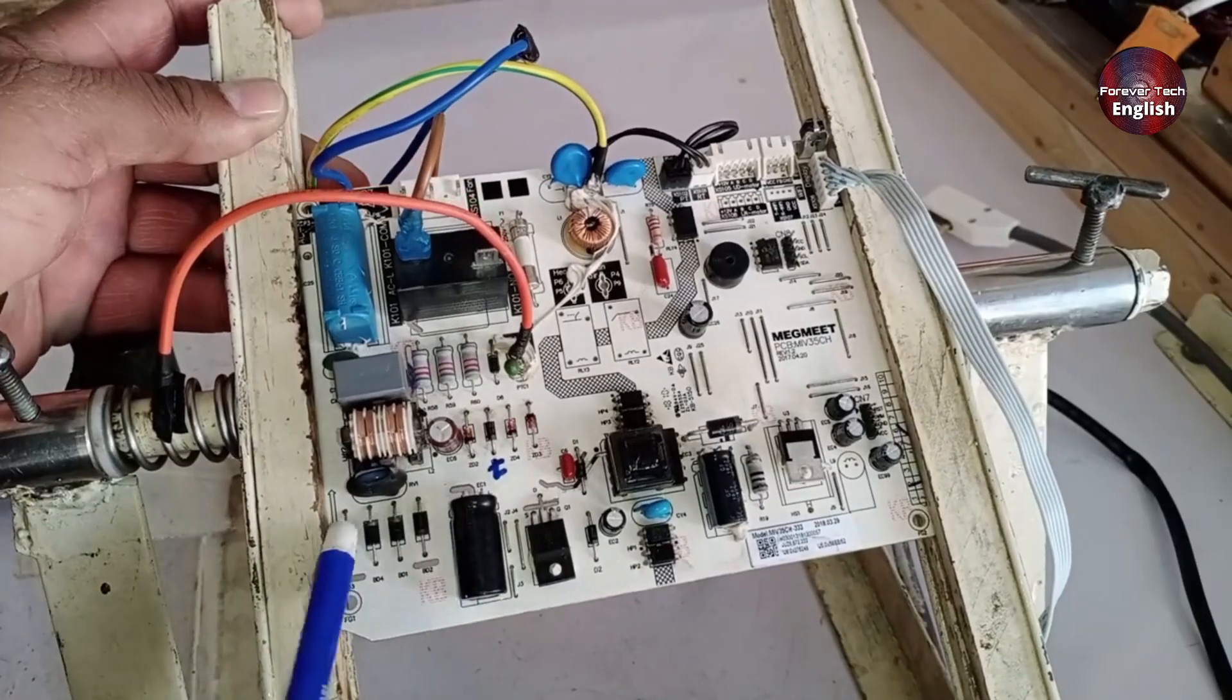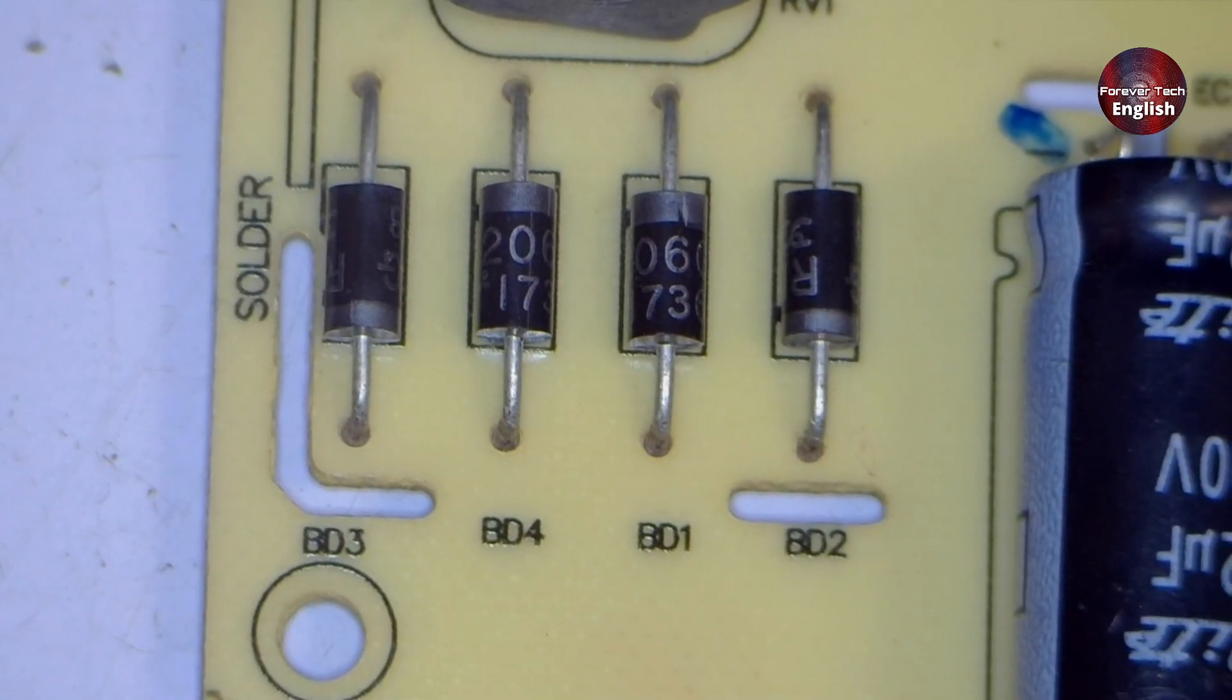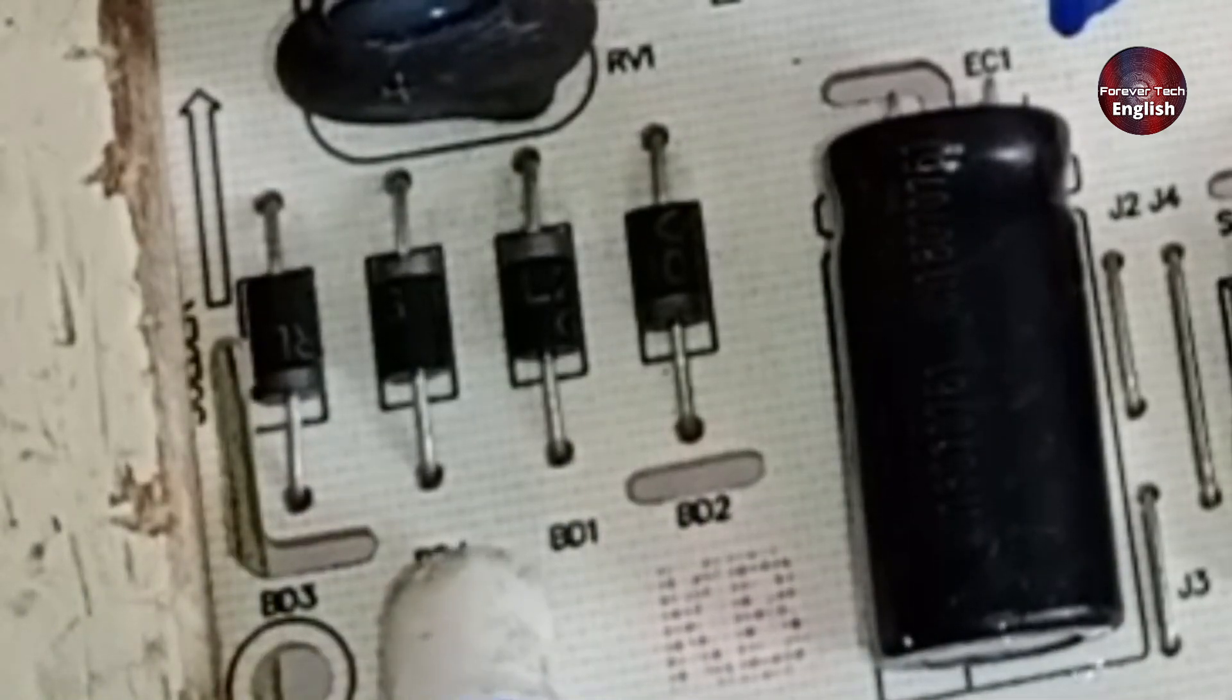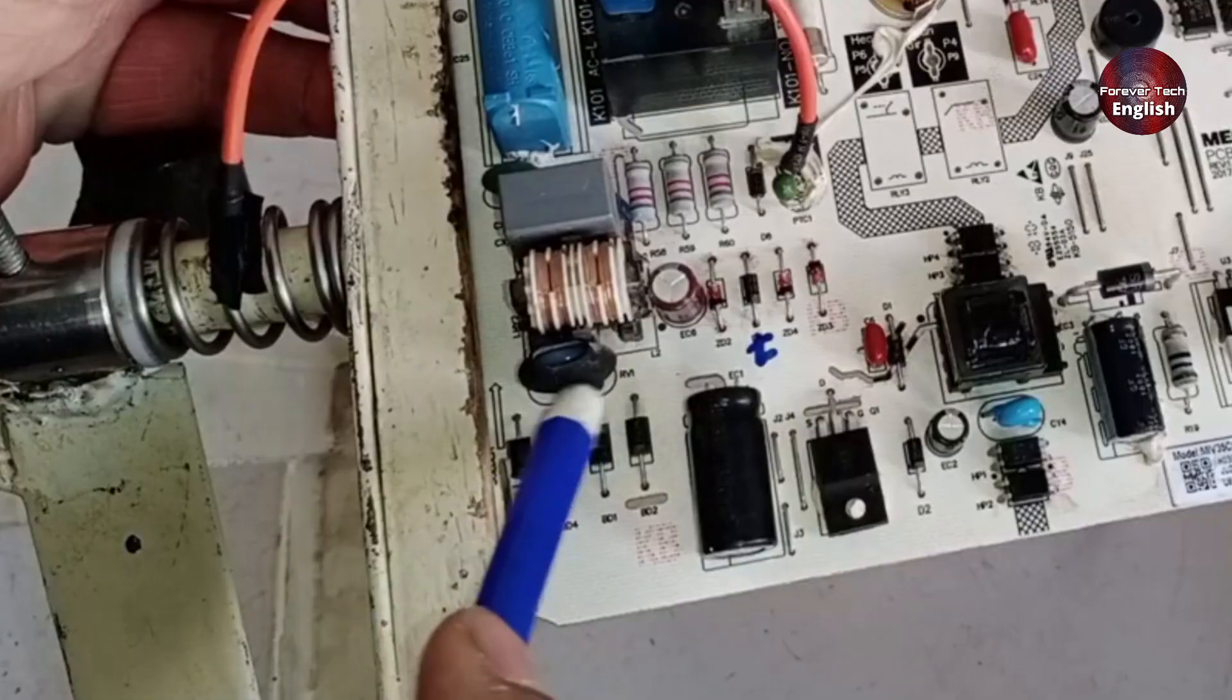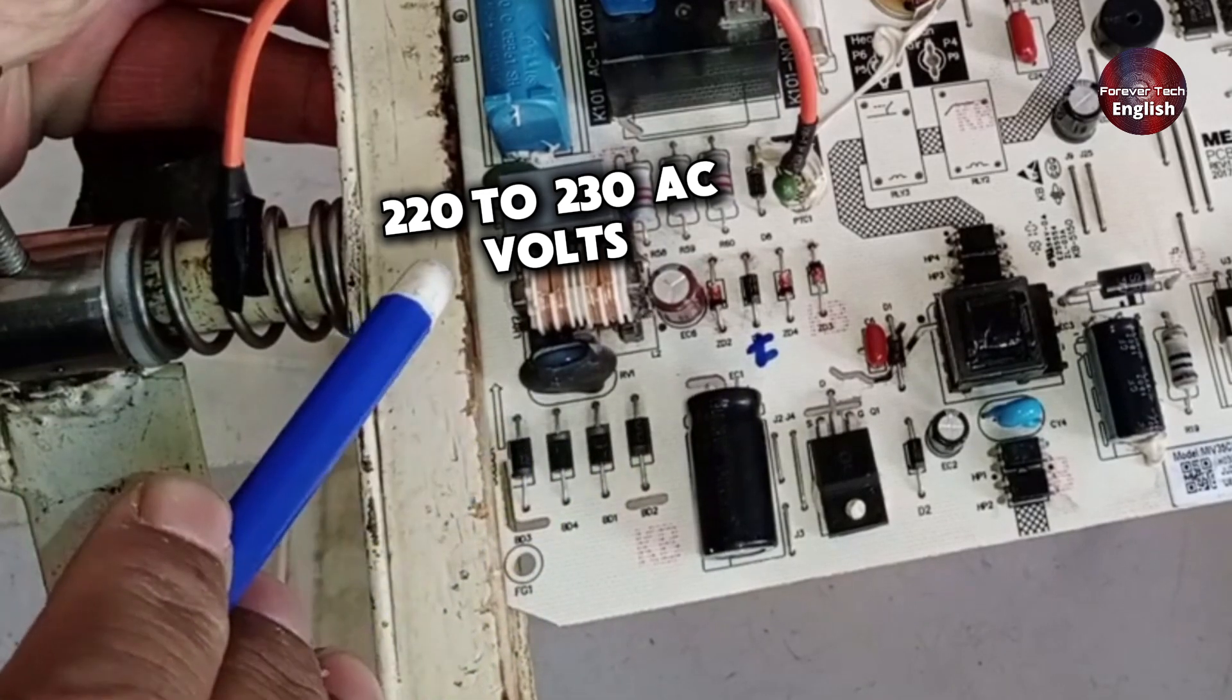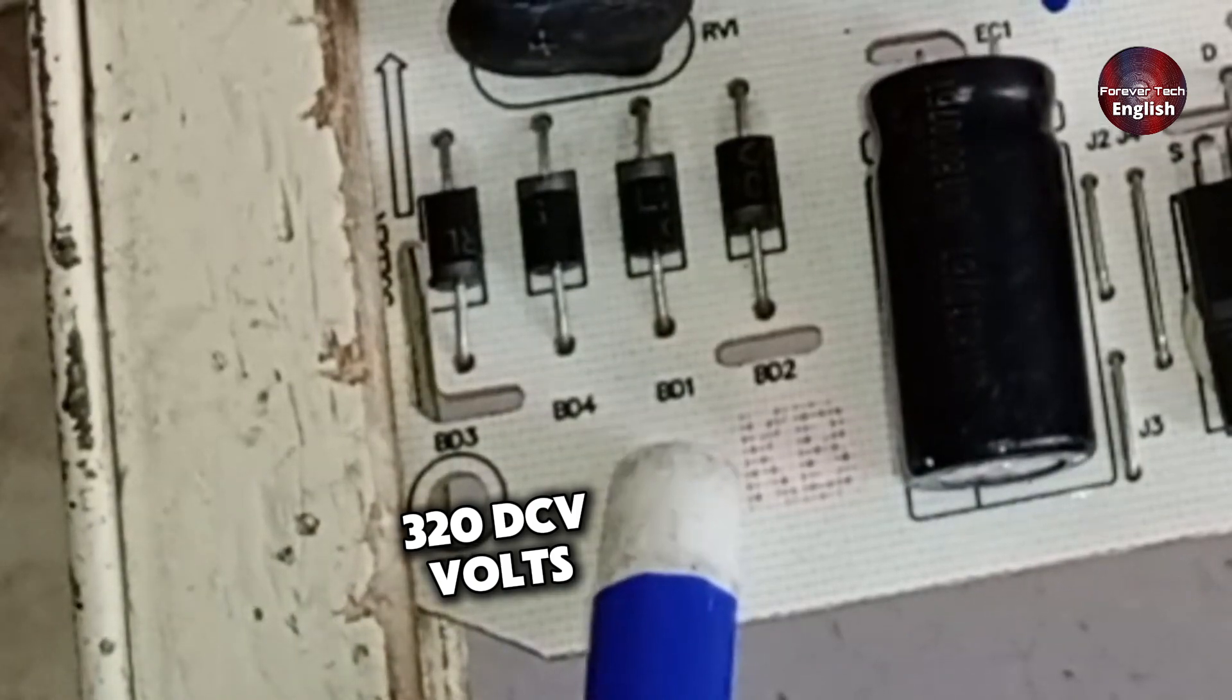Now, let's talk about the rectification process. Look at the diodes, two on the left side and two on the right side. The points of both are connected together here at BD3 and BD4, while BD1 and BD2 are connected separately. You should get 220 to 230 volts on the upper side, and on the lower side, you should get 320 volts on BD4 and BD2.